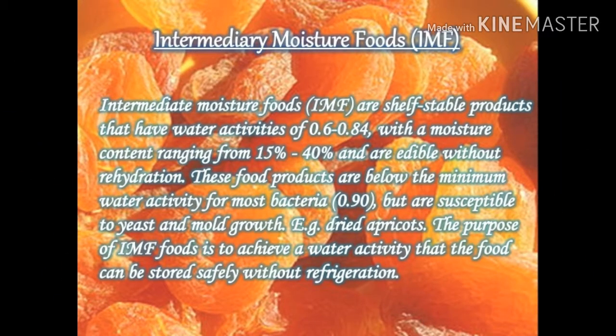Intermediary Moisture Foods, i.e., IMF. Foods which contain 20–40% moisture and have non-refrigerated shelf stability are referred to as IMF. Examples include jams, jellies, sauces, honey, dried foods, fruit purees, condensed milk, etc.